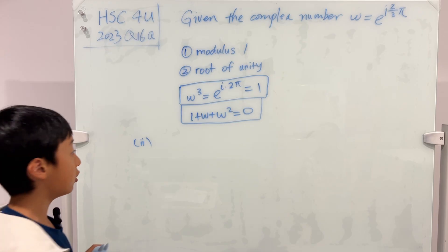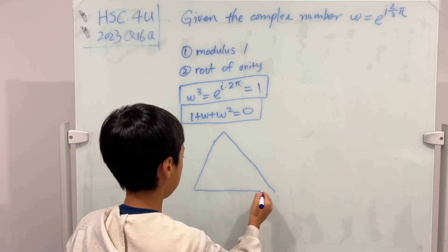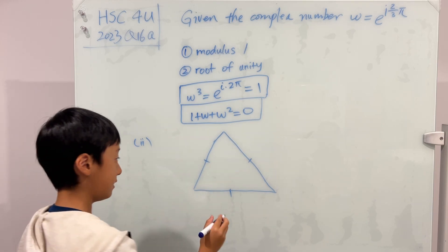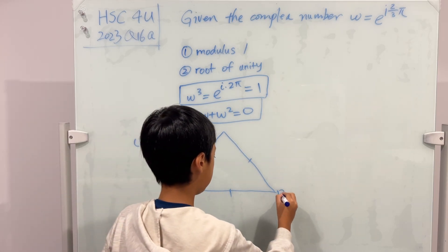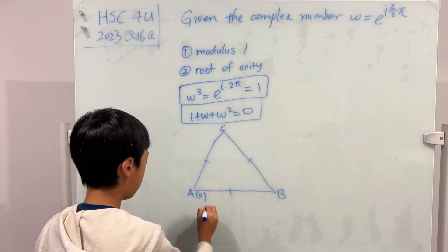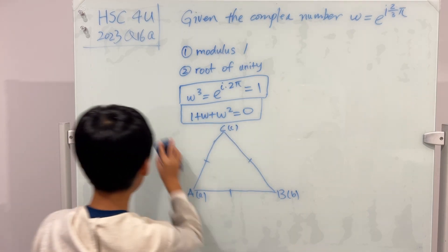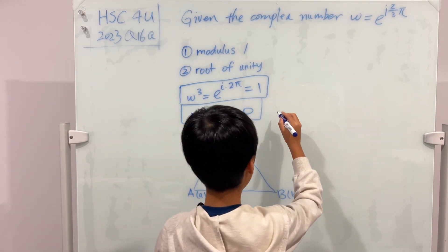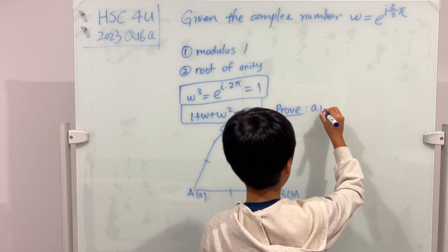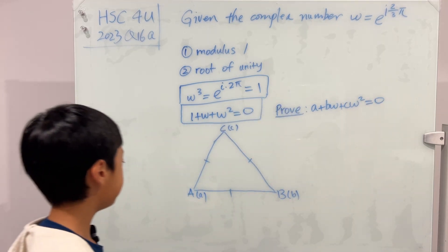So we have an equilateral triangle. Sorry for my super bad equilateral triangle. And the markings are going anti-clockwise. So A will be here, B will be here, C will be here. And A has its own complex number, little a. B, same, little b. C, same, little c. And it asks us to prove that a plus bw plus cw squared is equal to 0.